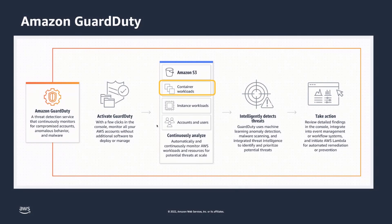GuardDuty, once it identifies threats, produces detailed findings that you can view in the GuardDuty console, integrate into Amazon Security Hub, or consume through an event-based approach with Amazon EventBridge. This allows you to take action on findings and integrate them into whatever operational workflows you have for remediating or investigating threats in your environment.